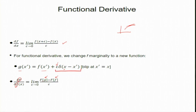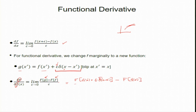I compute F[g] − F[f], substitute the perturbed function — which involves f(x′) + ε δ(x − x′) — subtract F[f(x′)], divide by ε, and take the limit as ε → 0. This gives a number proportional to ε; dividing by ε yields the functional derivative.